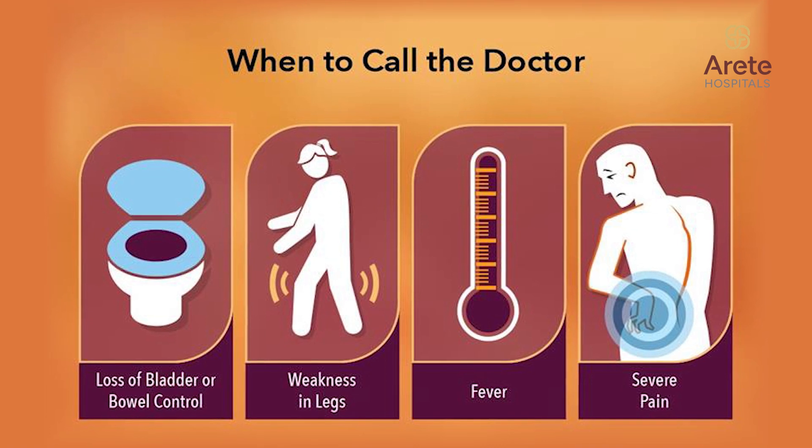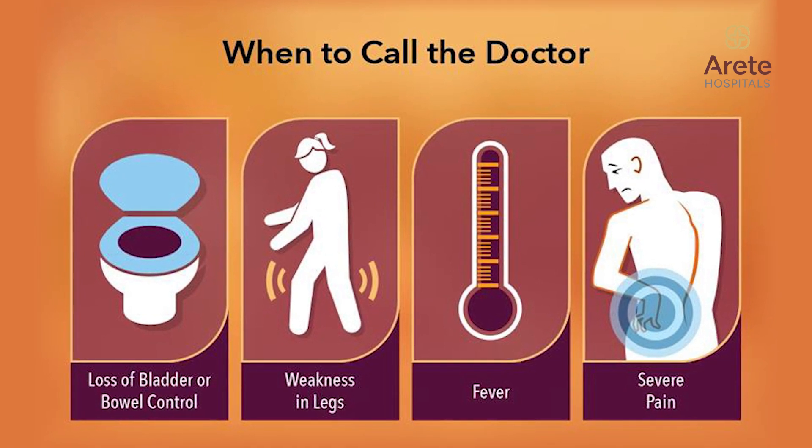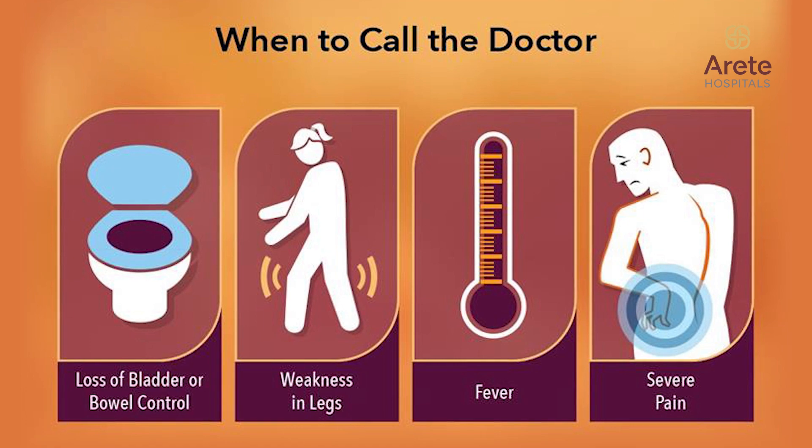Once the diagnosis of disc prolapse is confirmed, we need to determine the best treatment for the patient. Most disc prolapses are treated conservatively. Surgery is suggested only in a few instances: severe excruciating pain in the lower limb with weakness, any urinary problems, or cases where the disc size is very large and neurological symptoms are anticipated in the future.